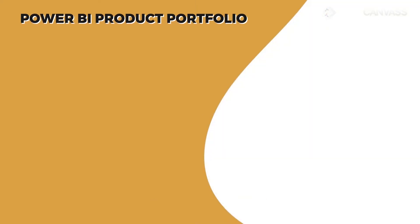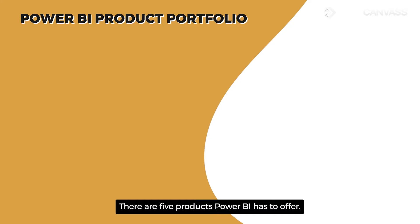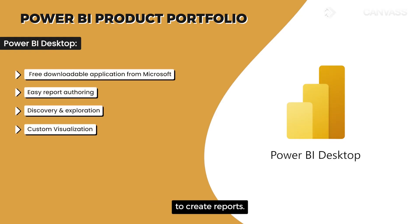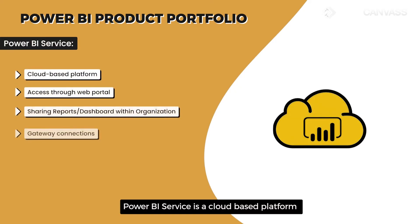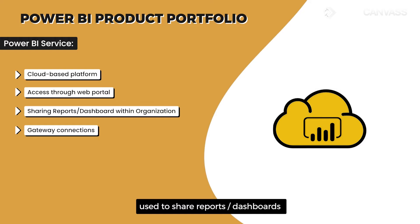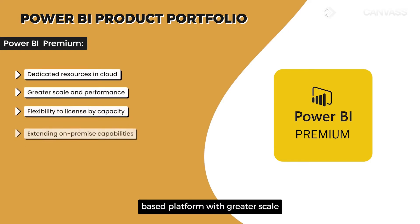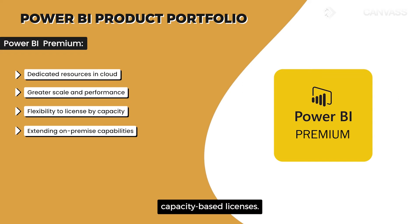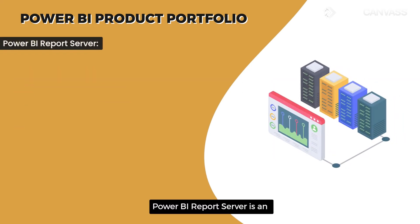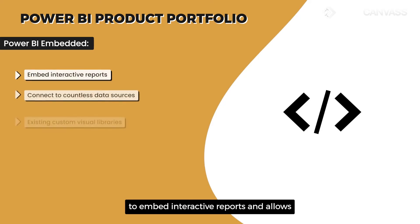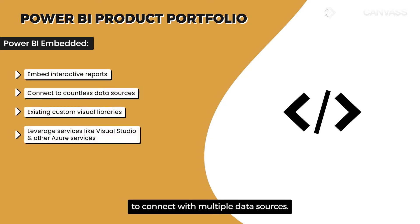Now let us look at the Power BI product portfolio. Power BI offers five products. Power BI Desktop is a free downloadable application from Microsoft to create reports. Power BI Service is a cloud-based platform used to share reports and dashboards within the organization. Power BI Premium is a dedicated cloud-based platform with greater scale and performance, with capacity-based licenses. Power BI Report Server is an on-premise reporting solution offering connectivity to 80-plus data sources. Power BI Embedded allows embedding interactive reports, connecting with multiple data sources, and also offers custom visual libraries.